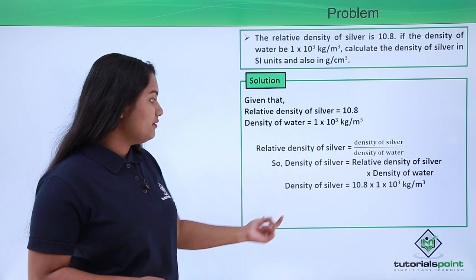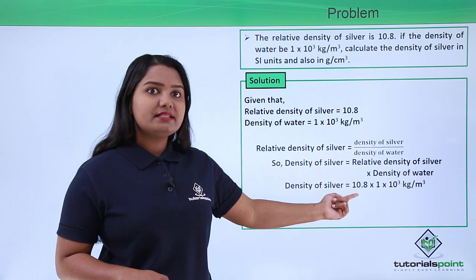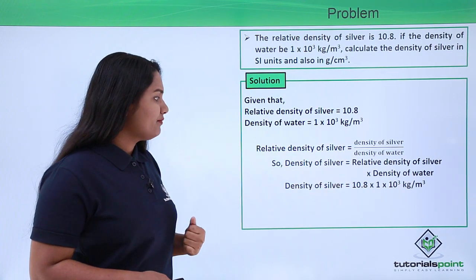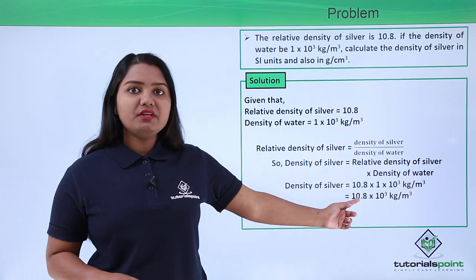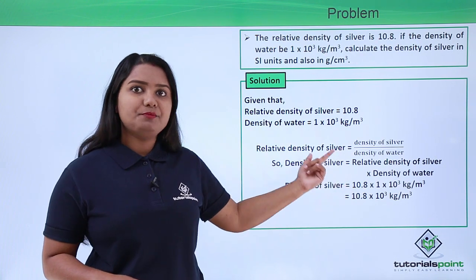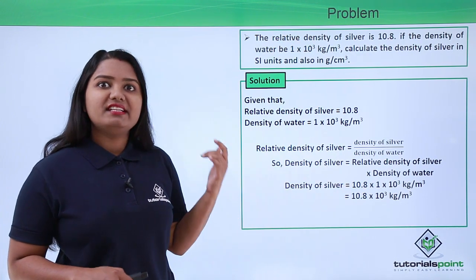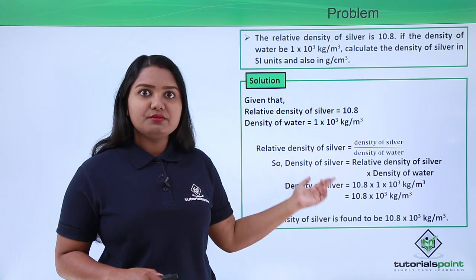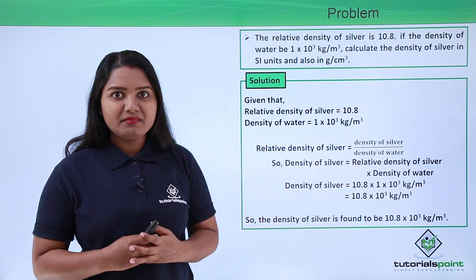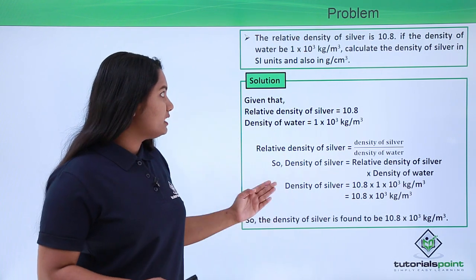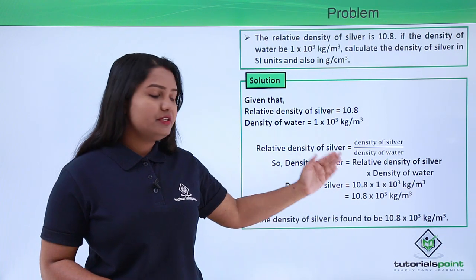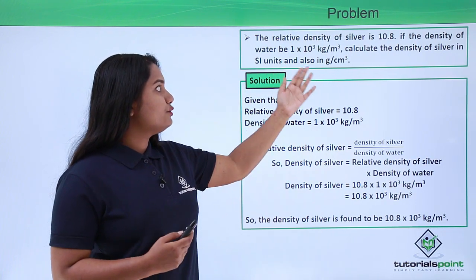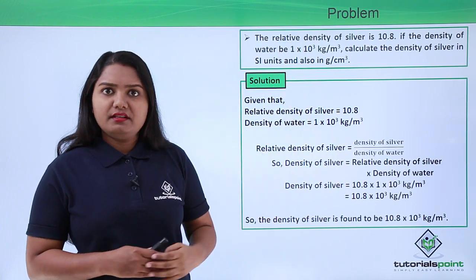On doing that, we have the density of silver equals 10.8 × 1 × 10³ kg per meter cube. This turns out to be 10.8 × 10³ kg per meter cube. So the density of silver is found to be 10.8 × 10³ kg per meter cube. The question also asks us to convert it to grams per centimeter cube.